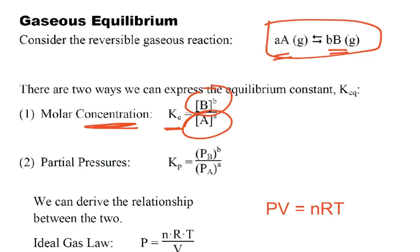Now the idea is we can also do that in terms of partial pressures. So in this case, we can talk about the partial pressure of B divided by the partial pressure of A, raised to the coefficients B and A. So it looks exactly the same as Kc, it's just we're doing partial pressures.